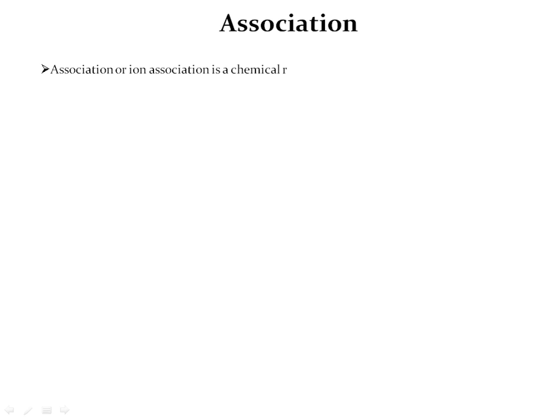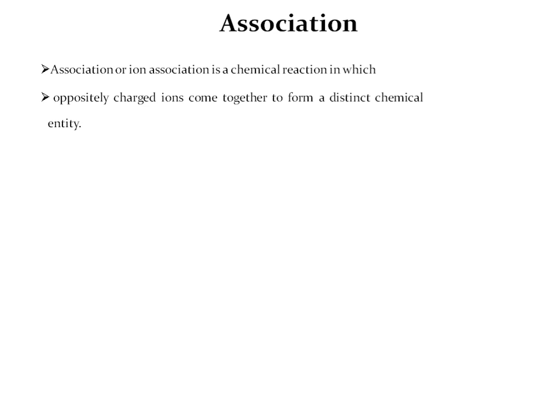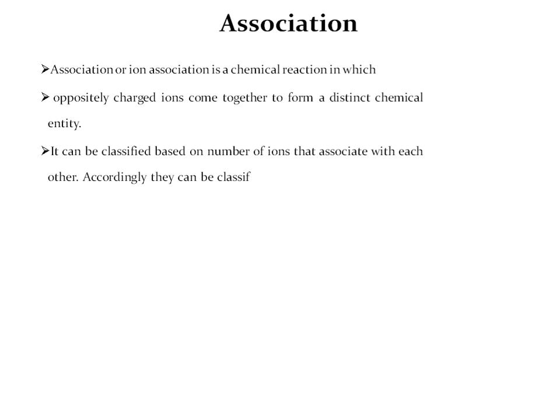Now we will move to the next point, that is association — the vice versa case of solvation. In solvation, ions dissociate from the crystal lattice into the solvent. In association, different ionic species combine to form special chemical entities. Association or ion association is a chemical reaction in which oppositely charged ions come together to form a distinct chemical entity. It can be classified based on the number of ions associated, into ion pairs and ion triplets.